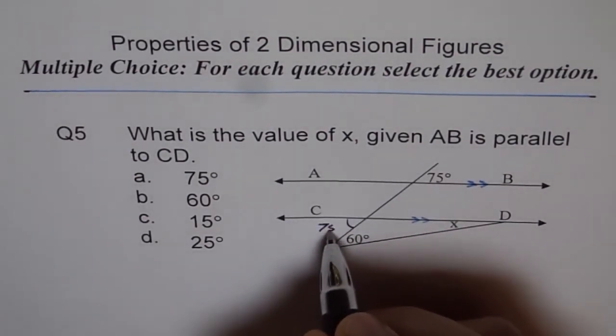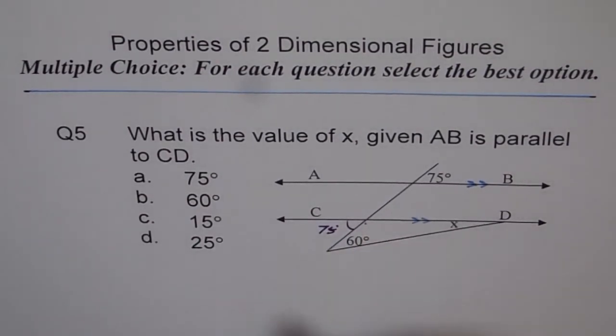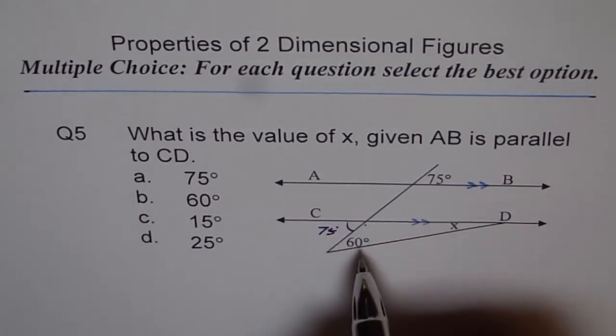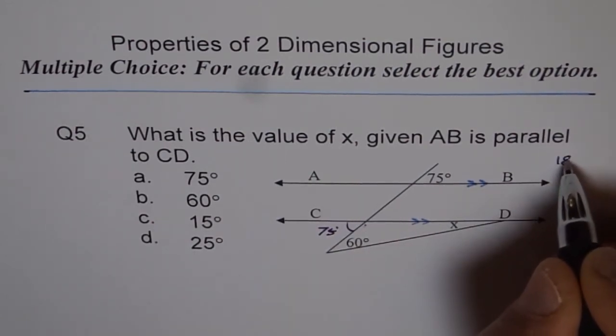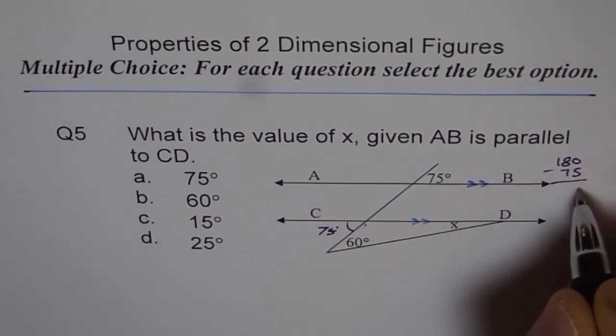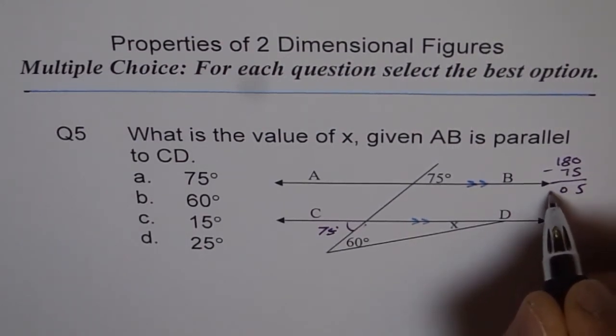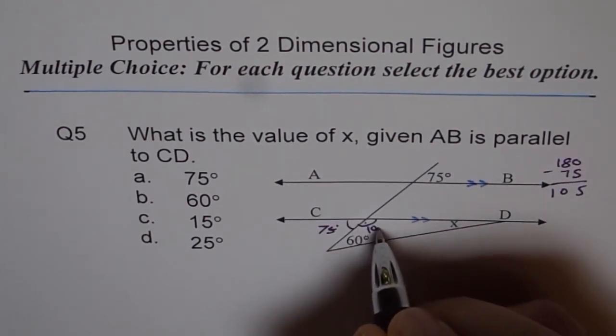So if that is 75, then what should be this? This is 180 minus 75. So we can do this 180 minus 75. That gives us 105 degrees. So this one is 105 degrees.